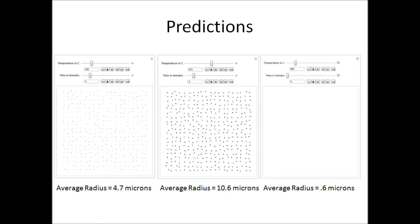The rightmost display is a simulation with parameters of 485 degrees Celsius and a 4 minute growth. That brings our average radius down to 0.6 microns, or 600 nanometers, giving us wires with a diameter of 1.2 microns, very close to a true nanowire with a diameter less than 1 micron.